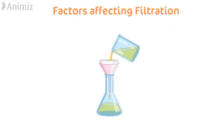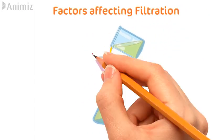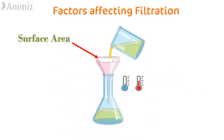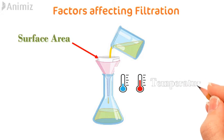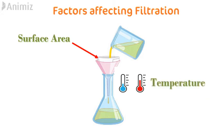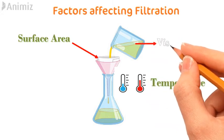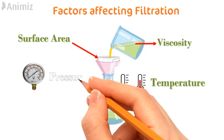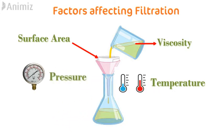Let's see various factors which affect the filtration rate. The first one is surface area — more surface area means more filtration rate. The second is temperature — more temperature means more filtration rate. The third factor is the viscosity of the slurry — higher the viscosity, less is the filtration rate. The fourth factor is the pressure applied — higher the pressure applied, more is the filtration rate. And the last factor is the concentration of the slurry — higher the concentration, less is the filtration rate.